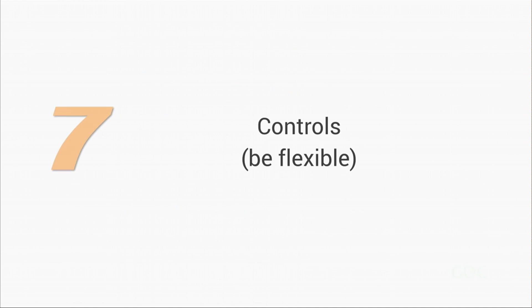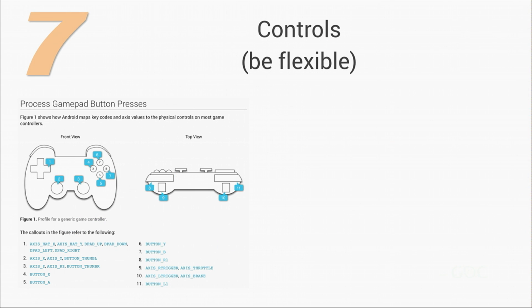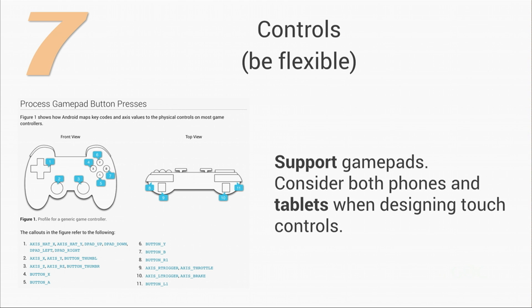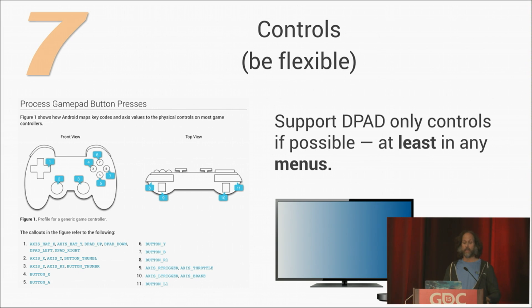Seven: controls. Be flexible with your controls. On developer.android.com we have a fantastic example of what standard button mapping looks like. Consider supporting game pads, and also consider both phones and tablets when designing touch controls — just because my screen is bigger doesn't mean my fingers are longer. And of course, think of TVs. This means you shouldn't require touch at all, and you should consider supporting D-pads, at least in your menus.